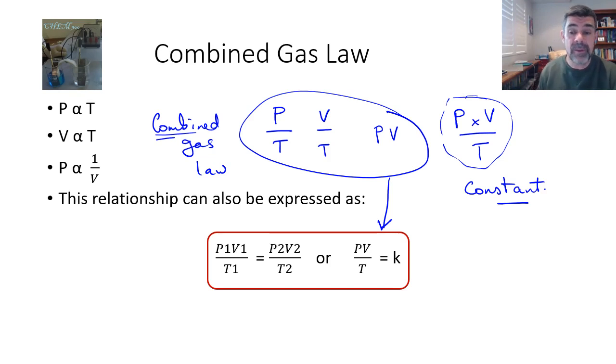To put the formula into a form that's similar to what you've already seen, P1 times V1 divided by T1 is equal to P2 times V2 divided by T2. So these expressions here are equivalent and for exactly the same reasons that we discussed above.